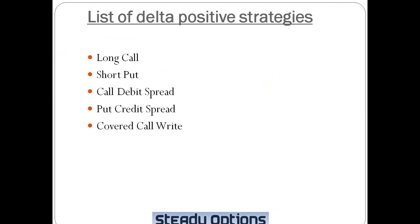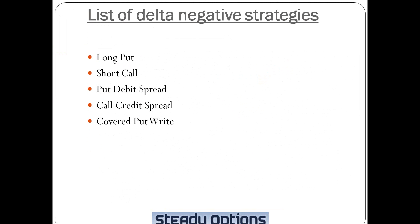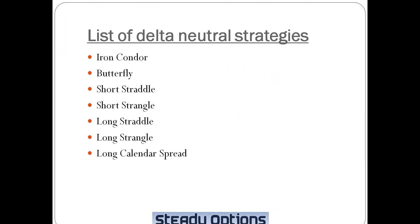A list of Delta positive strategies includes: long call, short put, call debit spread, put credit spread, and covered call. A list of Delta negative strategies includes: long put, short call, put debit spread, call credit spread, and covered put. Delta neutral strategies include short straddle, short strangle — which are naked strategies — long straddle, long strangle, and long calendar spreads. Those are the most popular Delta neutral strategies used at SteadyOptions.